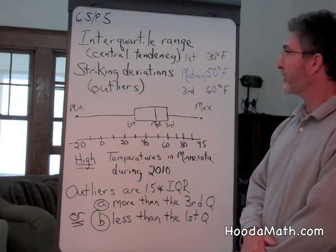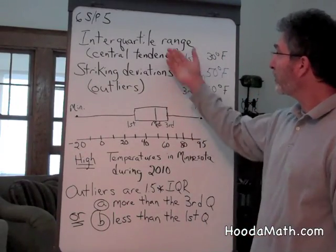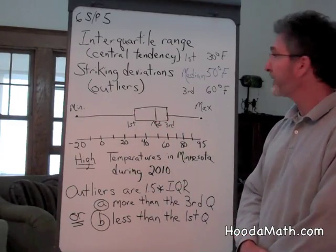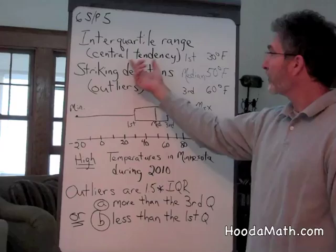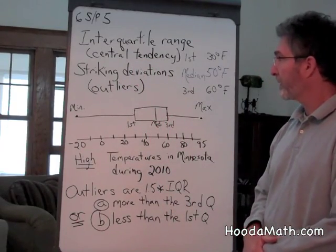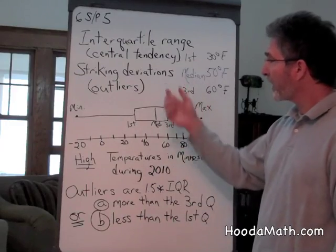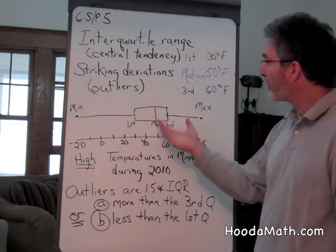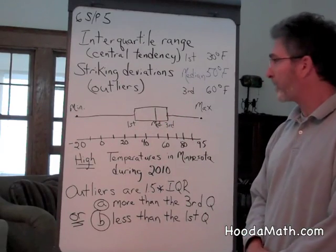When we use statistics, we have the interquartile range, which is found on a box plot, which shows the central tendency, or where most of the data is. We also sometimes have striking deviations, which are called outliers, which are far from the box plot.